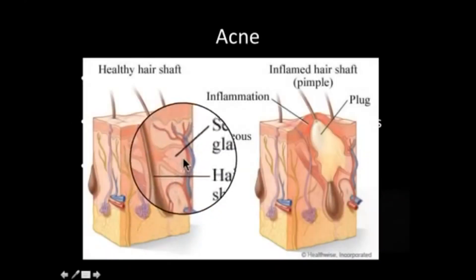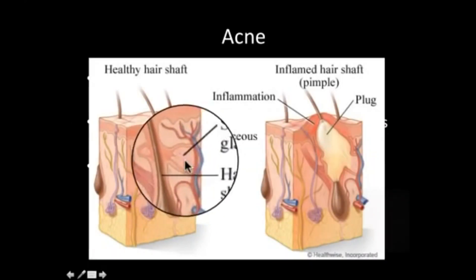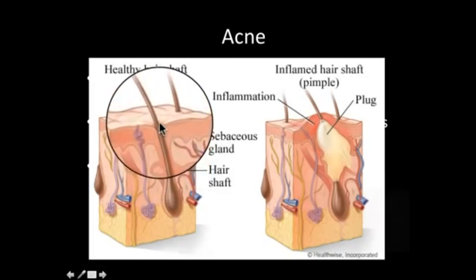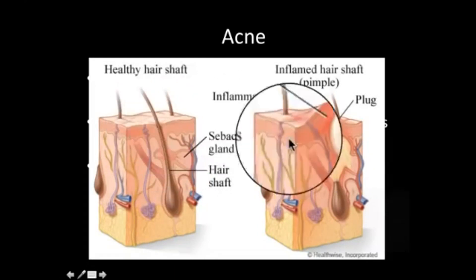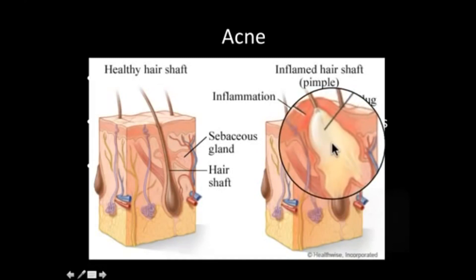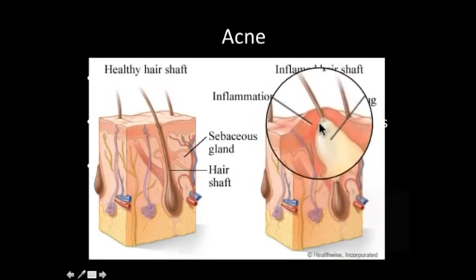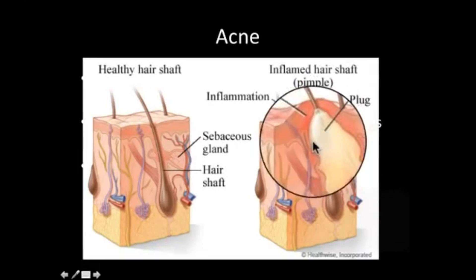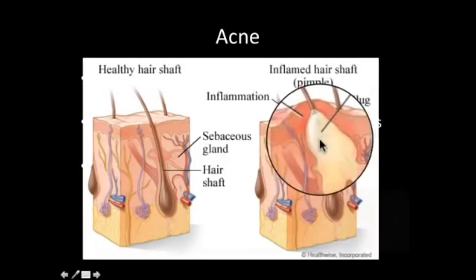On the left is a normal hair follicle with a sebaceous gland producing oil that can leave through the pore around the hair. On the right is a plugged sebaceous gland — the tissue around it has become inflamed. That plug of oil can appear as a whitehead or a blackhead, which is basically dried-up oil that has become oxidized and is not allowing any oil to escape.